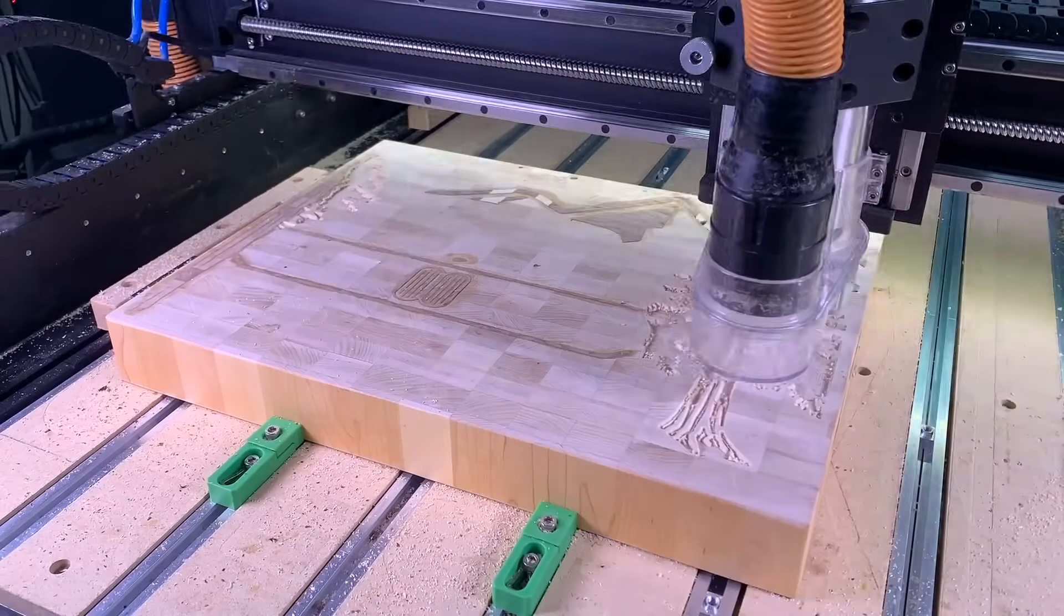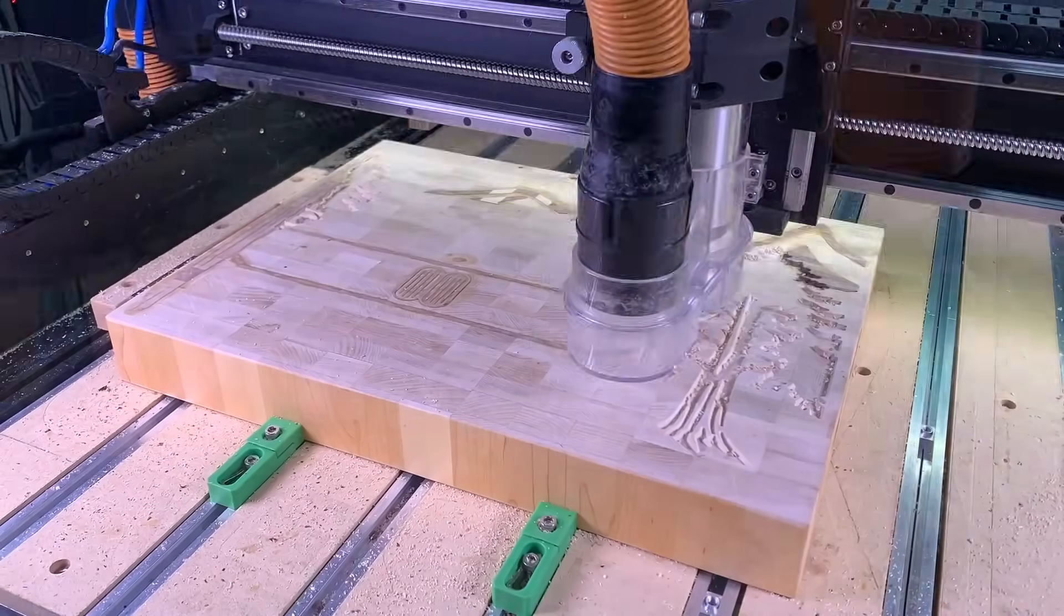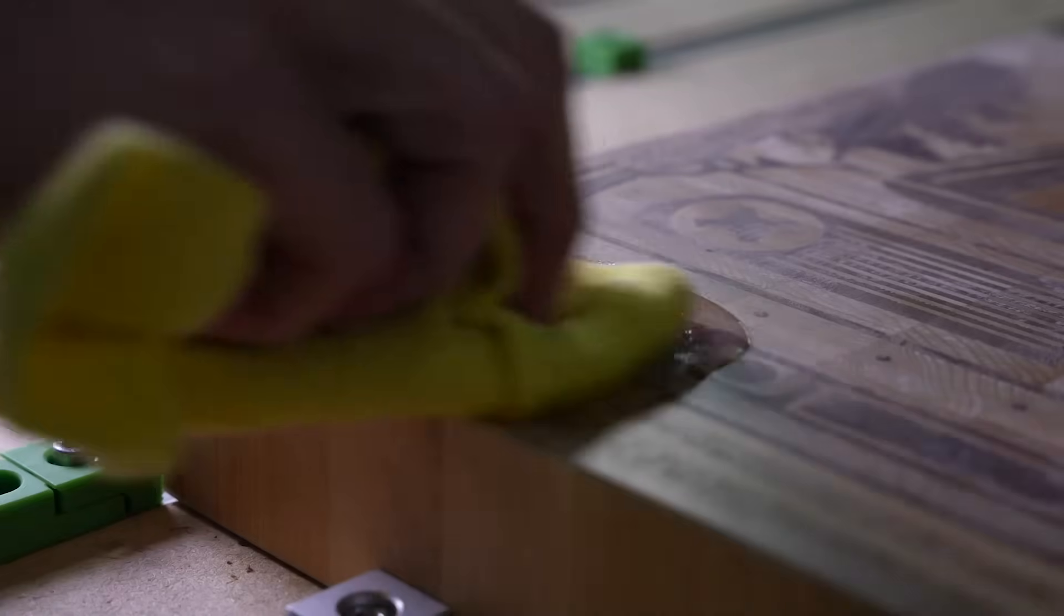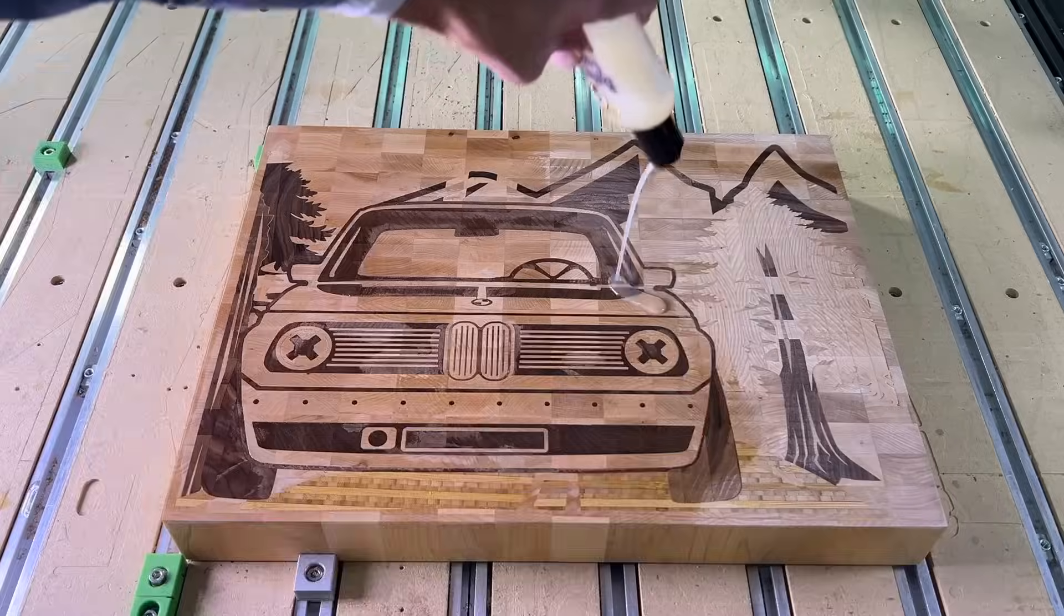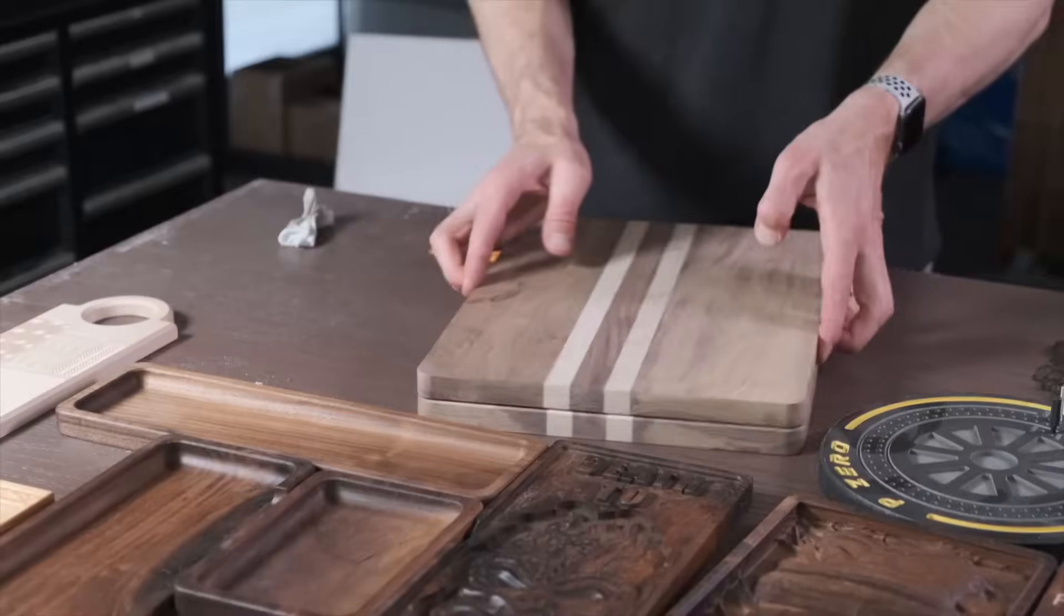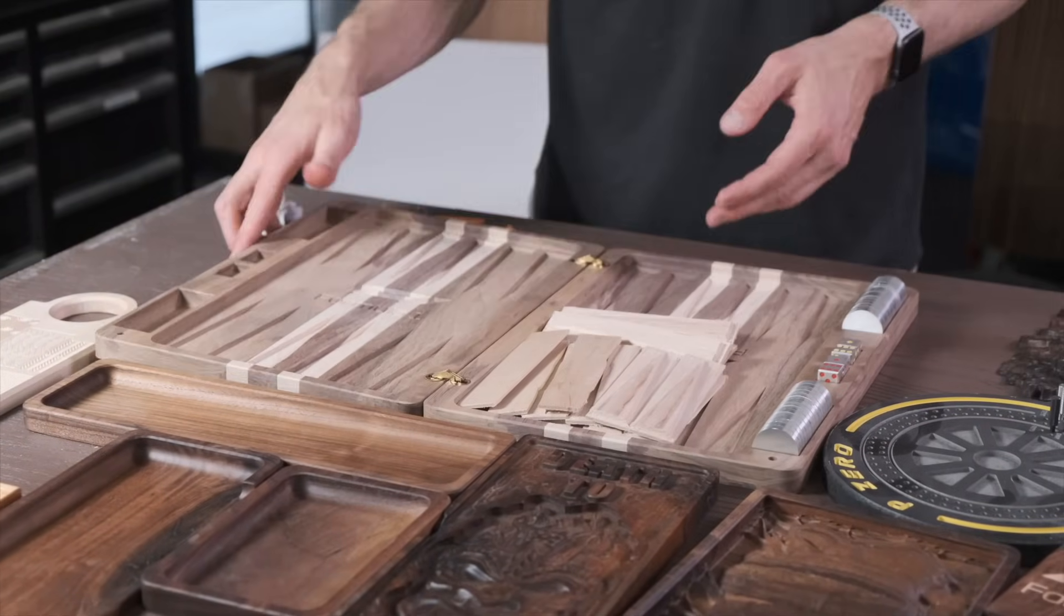But the point I'm trying to get at is, I can give you a number that describes the accuracy of a machine. It's just a line on a spec sheet. But people don't see numbers, they see results. And so to really understand what the Shapeoko is made of, we have to push it to its limits. So let's go have some fun.